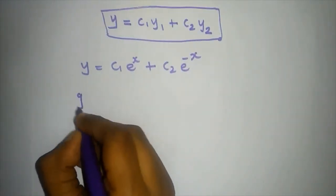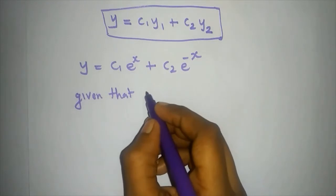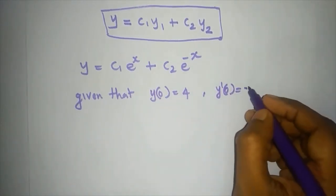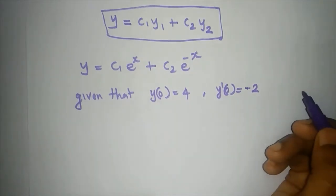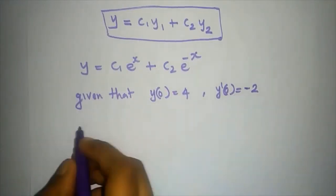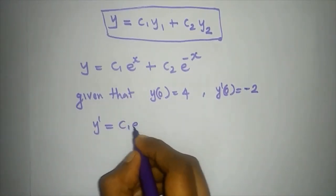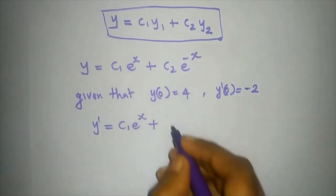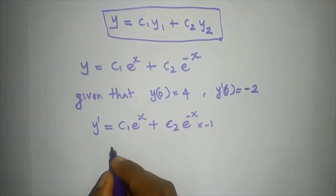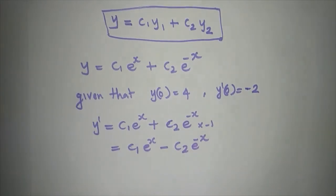We have been given the conditions: y(0) equal to 4 and y'(0) equal to minus 2. Now we will compute y'. y' equals c1*e^x plus c2 times the derivative of e^(-x), which is e^(-x) times minus 1. So y' equals c1*e^x minus c2*e^(-x).